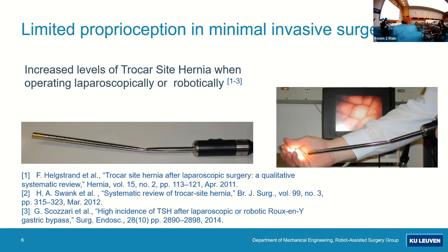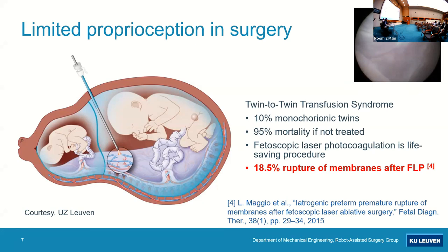In the keynote of Bradley Nelson was an application of fetal surgery, where this lack of proprioception is really a big deal. These fetal surgeons save lives of many fetuses. But in 18.5% of cases, after successful intervention, they apply this much force on the uterine wall that the uterus breaks, leading to preterm delivery, which is also fatal. So proprioception is a big deal.